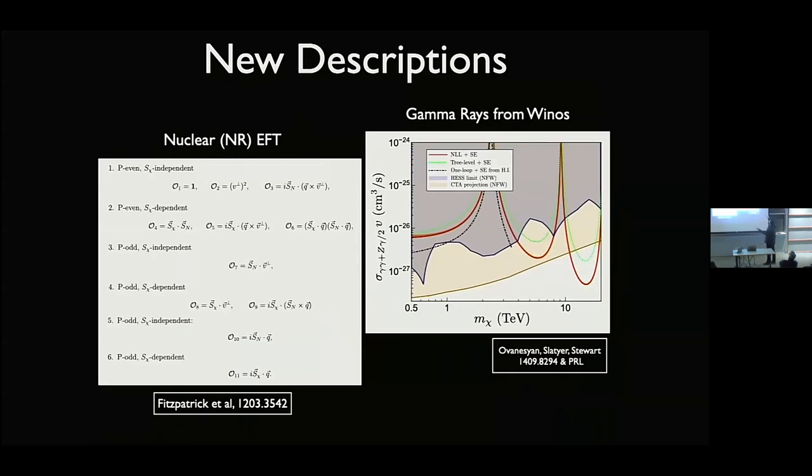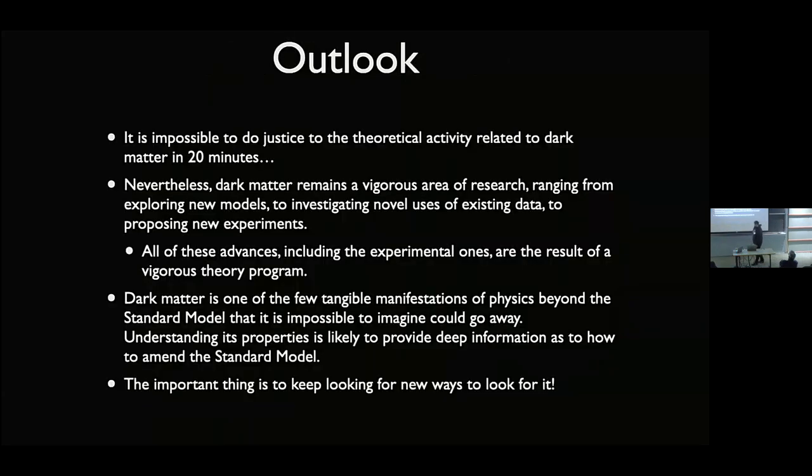And there's a lot of development of new theoretical tools. I'm sorry that I'm out of time. For example, nuclear EFTs to describe dark matter scattering with nuclei, uses of things like soft and collinear effective theory to describe gamma rays from WIMP annihilation. You really can't do justice to this in 20 minutes.